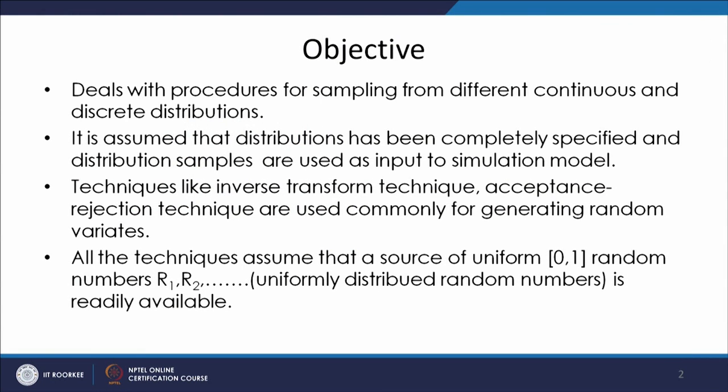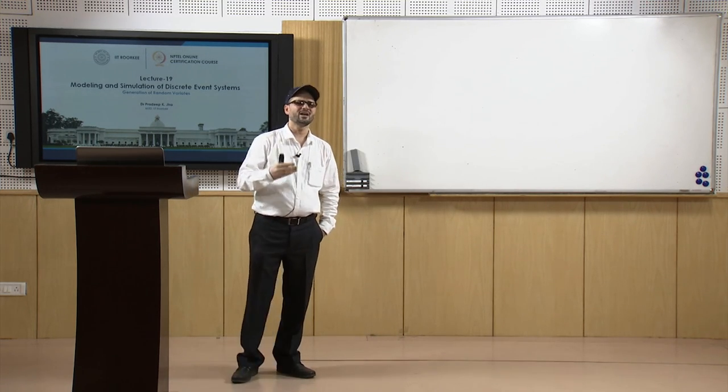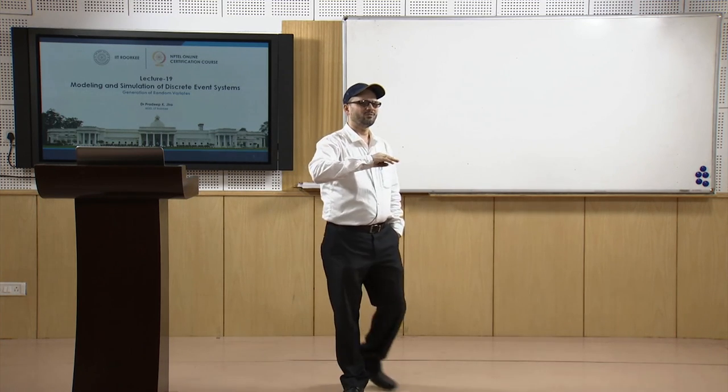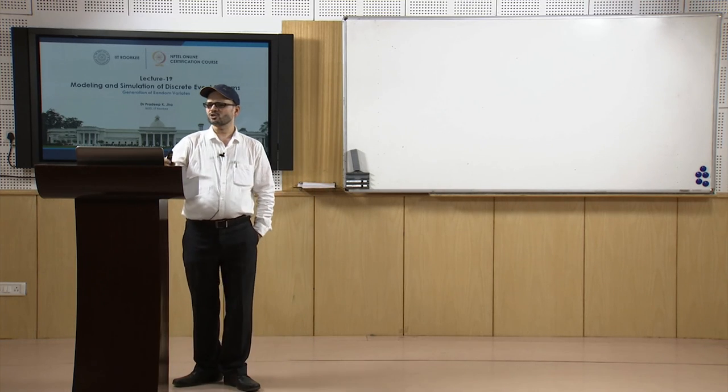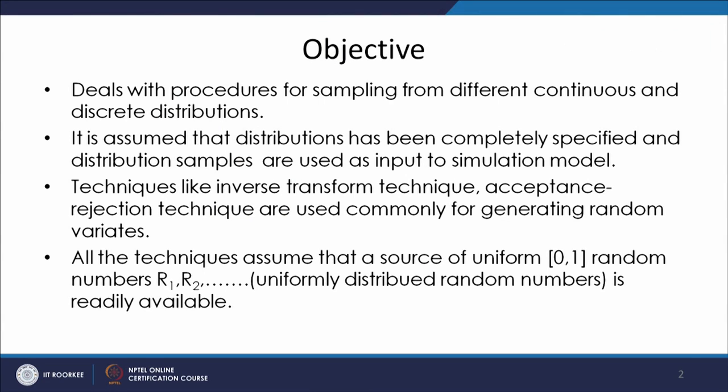In this lecture we will deal with procedures for sampling from different continuous and discrete distributions. You have the random numbers, and from those generated samples you are going to produce variates of a certain distribution type. It is assumed that the distribution has been completely specified — it may be Weibull, exponential, Poisson, triangular, or so — and these are used as input to the simulation model.